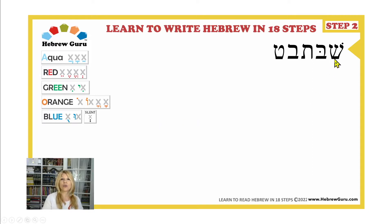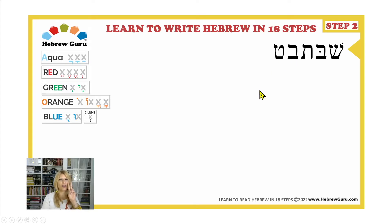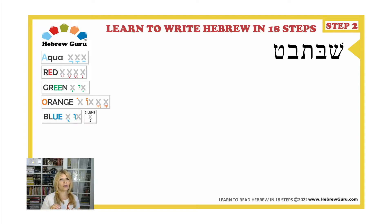Today, we're going to review very briefly the letters that we already learned: Shin, Bet, and Tav. And today, we're going to learn Vet and Tet. So, we're going to learn two new letters. This is the time for you to grab a piece of paper and a pencil because we are going to learn how to write these letters. We are also going to learn how to write a keyword.